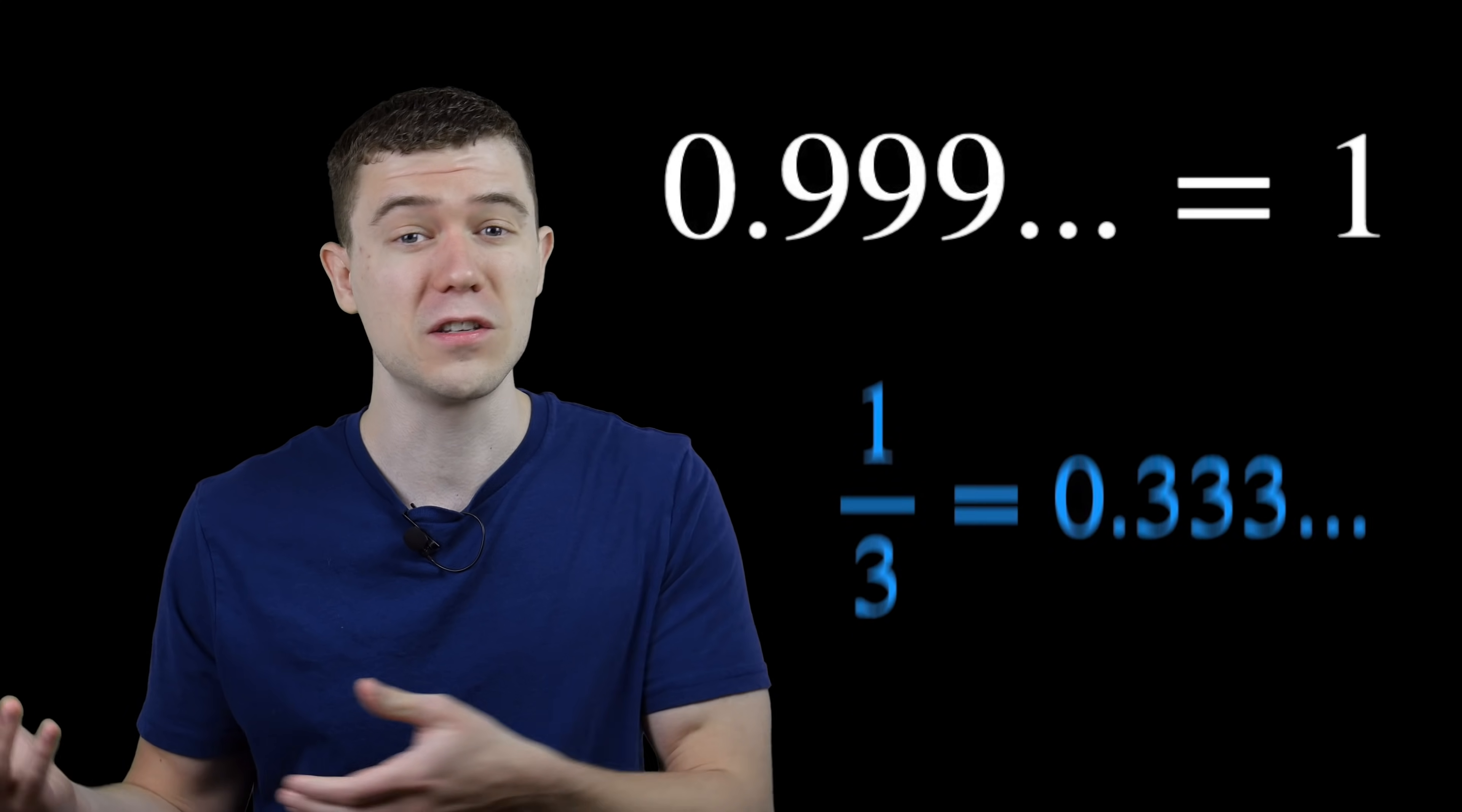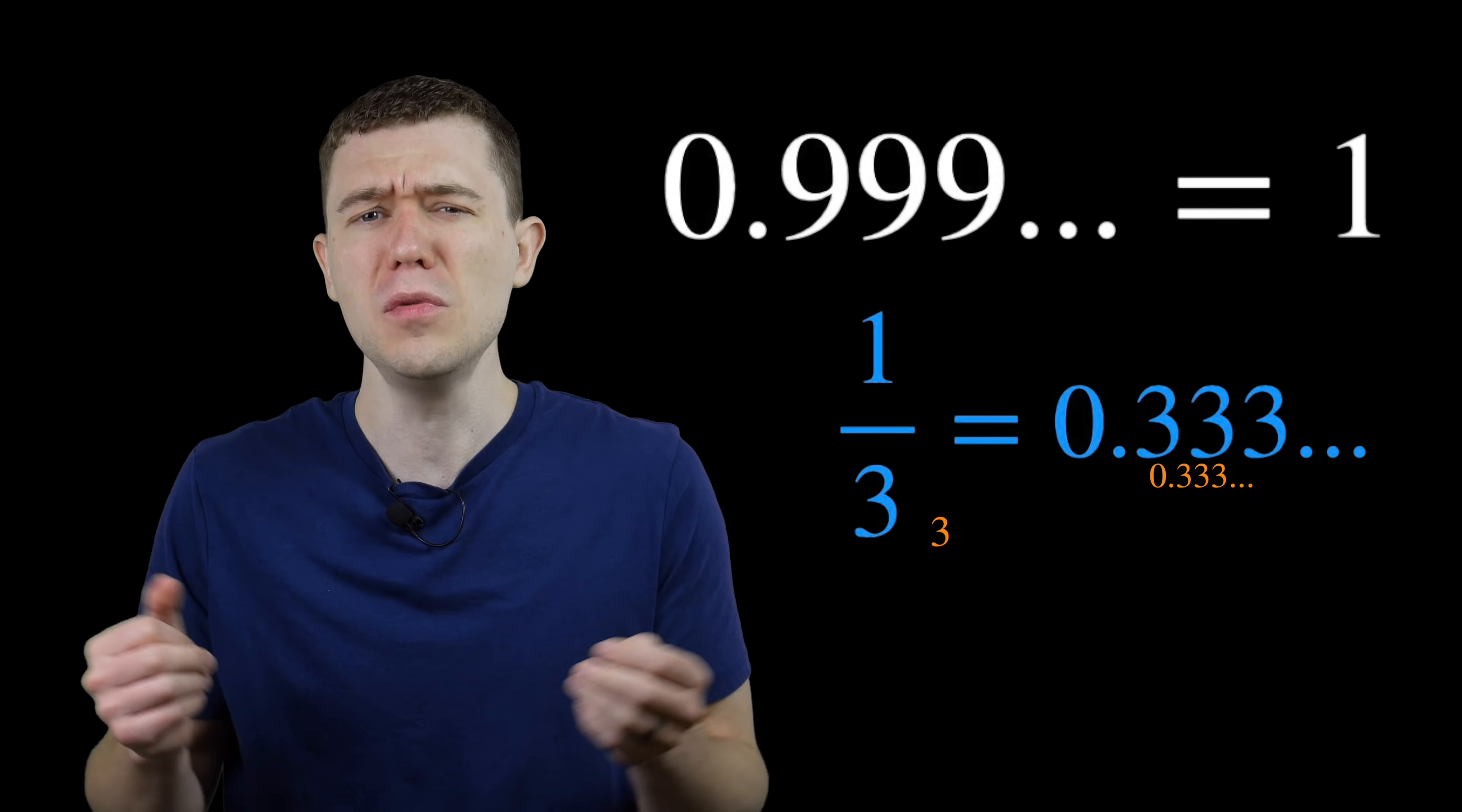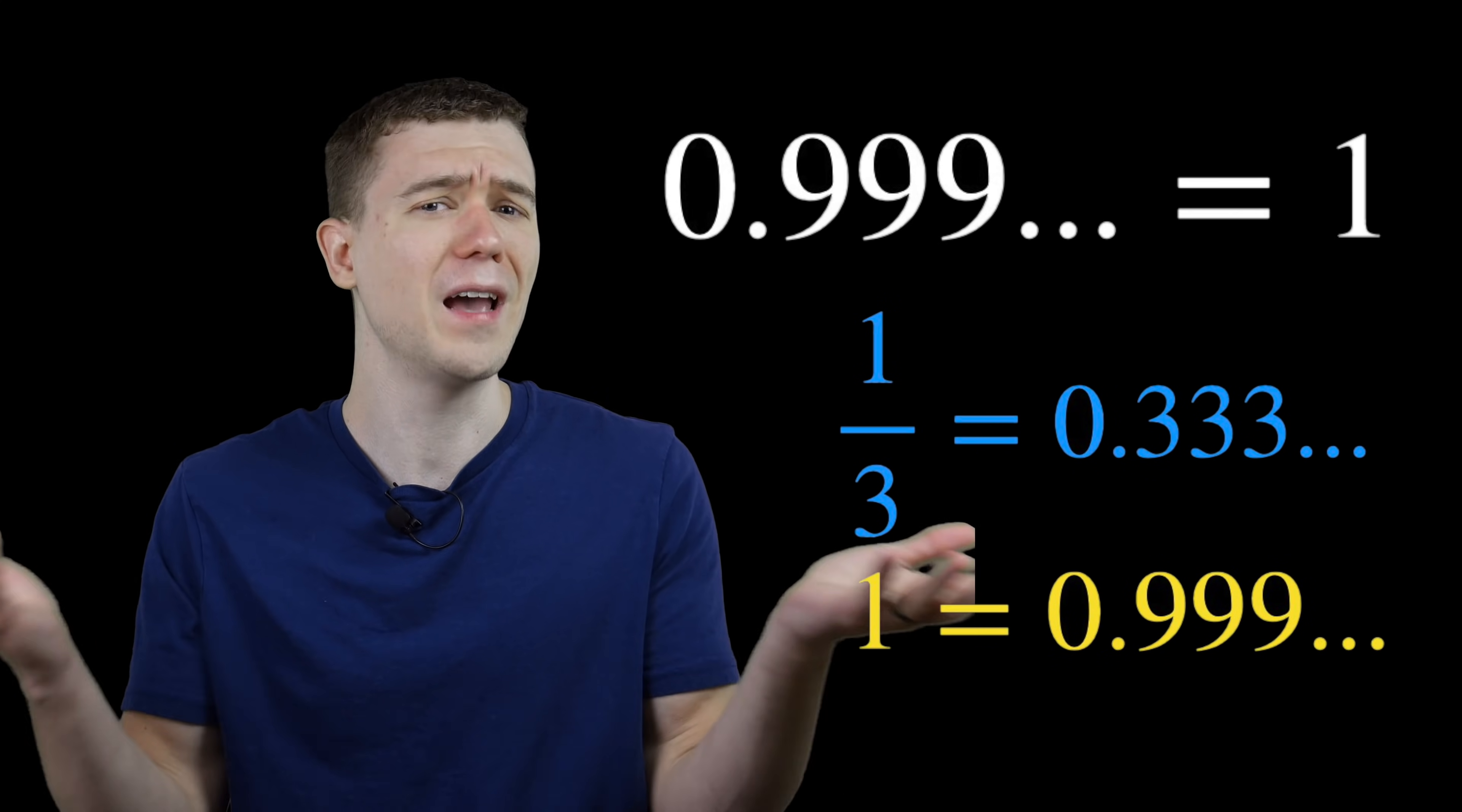Maybe you've seen some of the simple arguments for why 0.9 repeating equals 1. One third is certainly 0.3 repeating, and if you multiply both sides by 3, you get what we want.